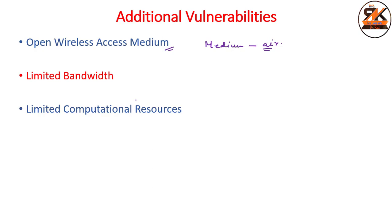Next is limited computational resources. Because of small-size devices that connect to access points — like mobile smartphones and laptops — computational resources are limited. These devices comparably have fewer computational resources than devices connected to wired networks. Executing stronger algorithms with more rounds or complex security algorithms on such low-resource constrained devices can be problematic — we will not be able to execute them in an efficient manner.